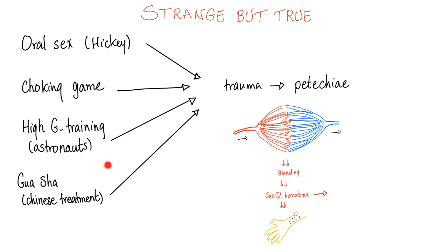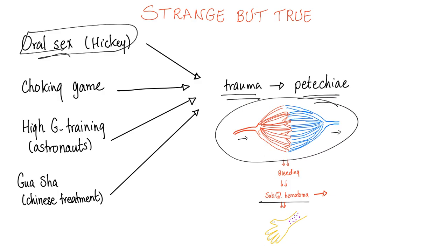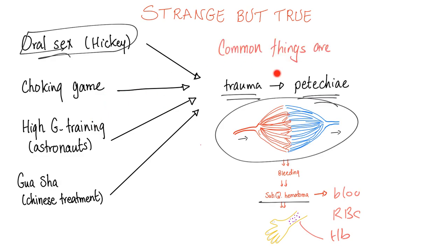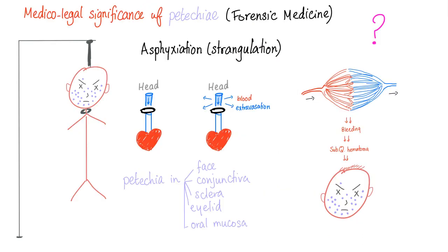Strange but true — all of these are causes of petechiae. If you understand the main concept: trauma leads to bleeding, leading to subcutaneous hematoma, which contains blood, which contains red blood cells, which contain hemoglobin, which gives you the red, blue, or purple color. These forensic and infectious causes are not the most common — don't forget thrombocytopenia is still the primary cause to consider.